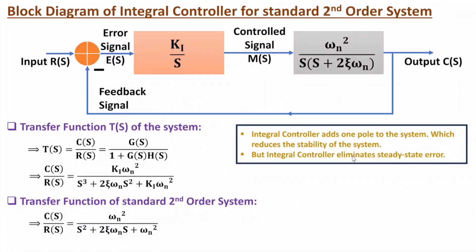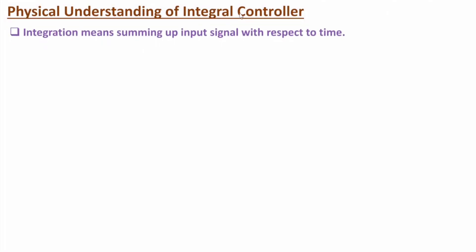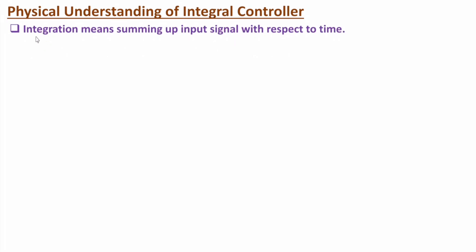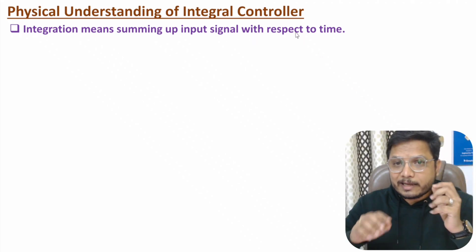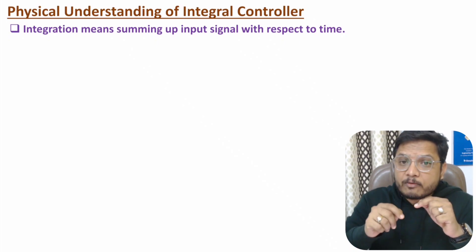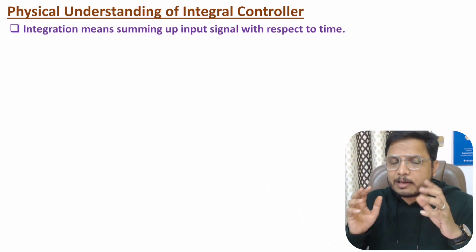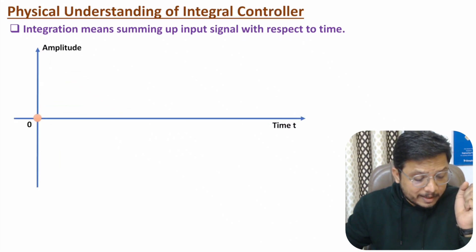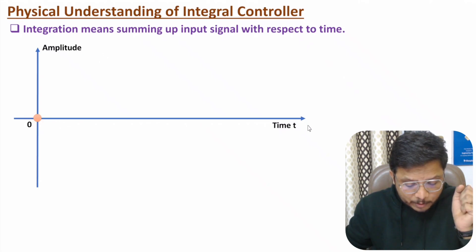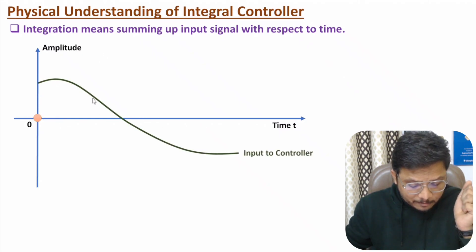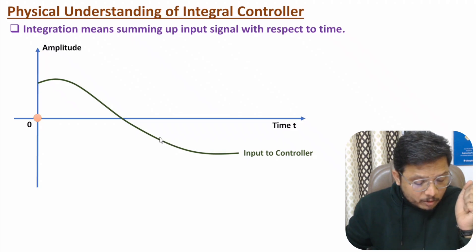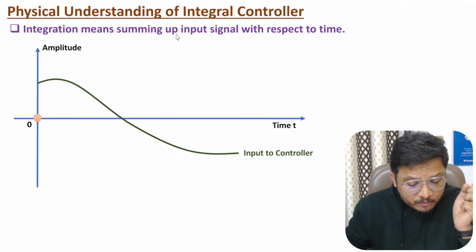Now I'll explain the physical understanding of the integral controller. Integration means summing up the input signal with respect to time. Graphically, on the vertical axis we have amplitude and on the horizontal axis we have time. The input signal is changing with respect to time, and the output starts at zero initially.